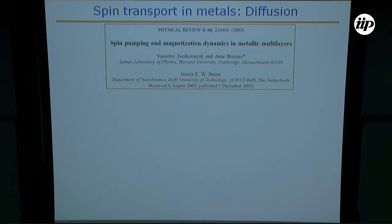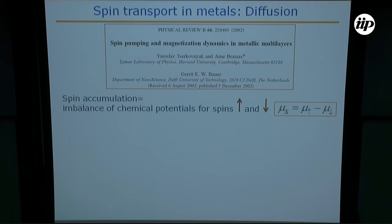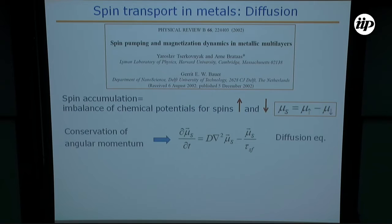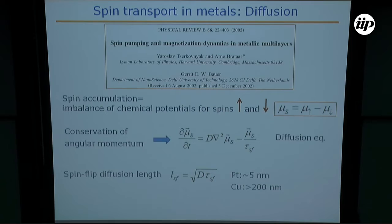There were several papers in the same year. The effect was analyzed using the so-called spin accumulation, which is an imbalance of the chemical potential for spin-up and spin-down electrons. The difference between the two chemical potentials gives what is called spin accumulation. By conservation of angular momentum, they obtain a diffusion equation for this spin accumulation with a characteristic spin diffusion length involving the diffusion constant and the spin flip scattering. For platinum this is 5 nanometers; for copper it's 200 nanometers. The spin current is simply the gradient of the spin accumulation.